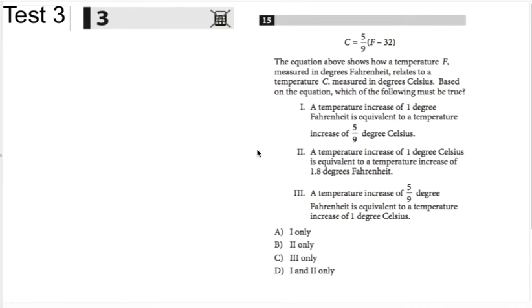Alright, this is SCT Prep. We're doing test 3, section 3, and this is number 15, which is the last of the multiple choice questions. The equation above shows the temperature F measured in degrees Fahrenheit as it relates to temperature C measured in degrees Celsius. Based on the equation, which of the following must be true?